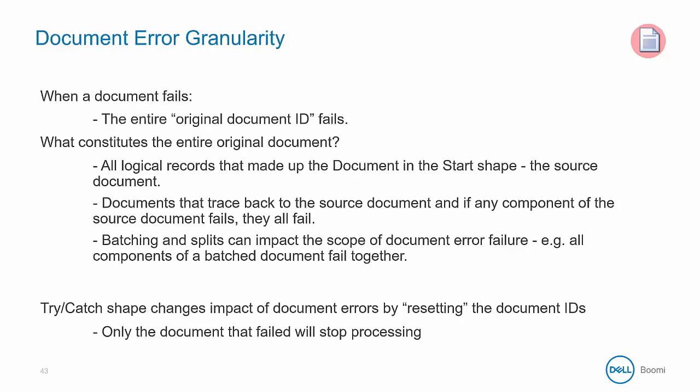A lot of these error concepts are based on the concepts of document flow and what constitutes a document. When the original document fails, all documents associated with that same document ID will also fail. An original document consists of all logical records that made up the document in the start shape or the source document. Batching and splits can impact the scope of document error failures. The try-catch shape also changes the impact of document errors by resetting the document IDs, so only the document that fails will stop while other documents can continue.